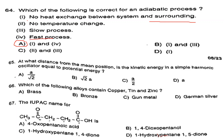Question number 65. At what distance from the mean position is the kinetic energy in a simple harmonic oscillator equal to potential energy? The answer is Option A: A/√2. Question number 66. Which of the following alloys contains copper, tin and zinc? Answer is Option C: Gun metal.